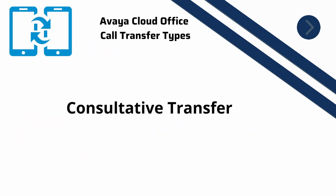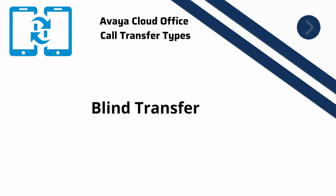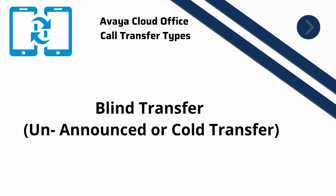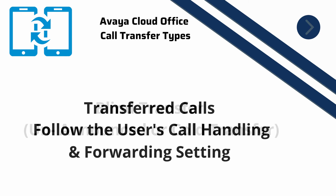There are two types of transfer with Avaya Cloud Office: Consultive Transfer and Blind Transfer. With Consultive Transfer, also known as Announce Transfer, you can announce the transfer before completing it. With a Blind Transfer, the call is transferred immediately. Transferred calls that are not answered will follow the user's call handling and forwarding settings.